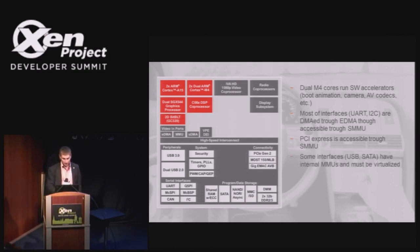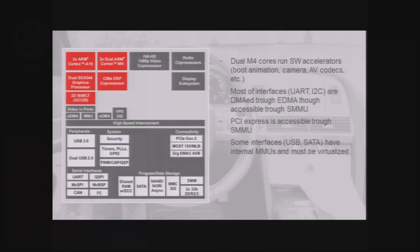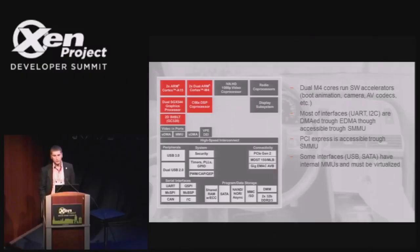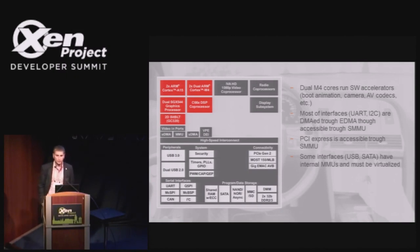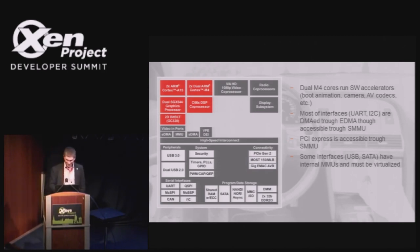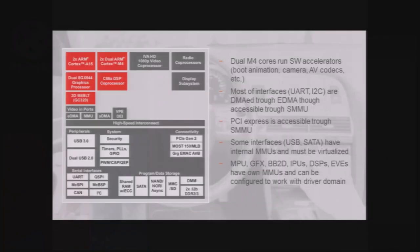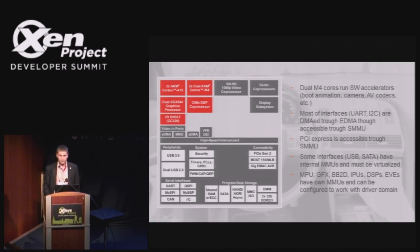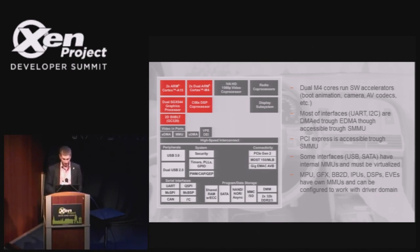PCI Express is also accessible through SMMU. Some interfaces like USB and SATA, which have their own DMA not going through the system SMMU, leave you no option except para-virtualization, unfortunately. GPUs, graphics, bit blitter, IPUs, DSPs — all these are actually separate CPUs with their own MMUs, which can be configured the same way as SMMU is configured. So they can work with the driver domain safely and even do sharing between DOM 0 and DOM U without para-virtualized drivers through those MMUs.